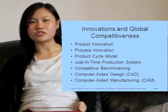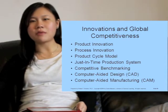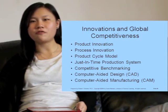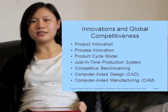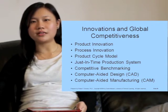There are two types of innovations: product innovation and process innovation. The product cycle model states that firms that introduce an innovation eventually lose their export market and even their domestic market to foreign imitators facing lower production costs. In just-in-time production systems, every component of a product becomes available just when needed. Competitive benchmarking is the comparison of the efficiency of a firm's production methods relative to its competitors. Computer-aided design (CAD) allows R&D engineers to design a new or changed product on a computer screen, while computer-aided manufacturing (CAM) allows engineers to issue instructions to a network of integrated machine tools to produce a prototype.